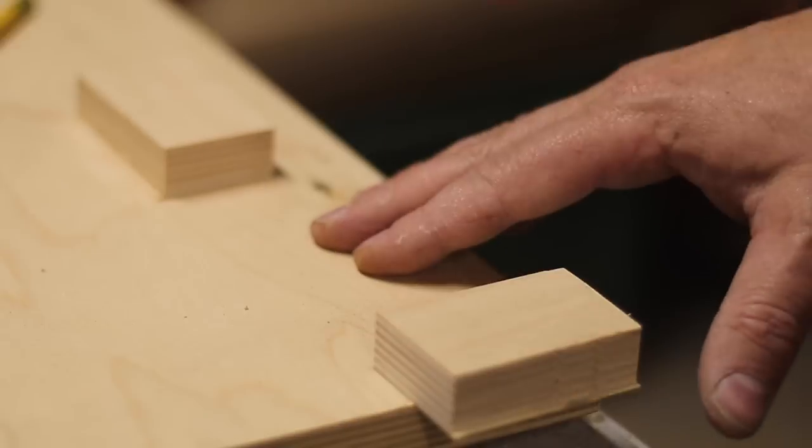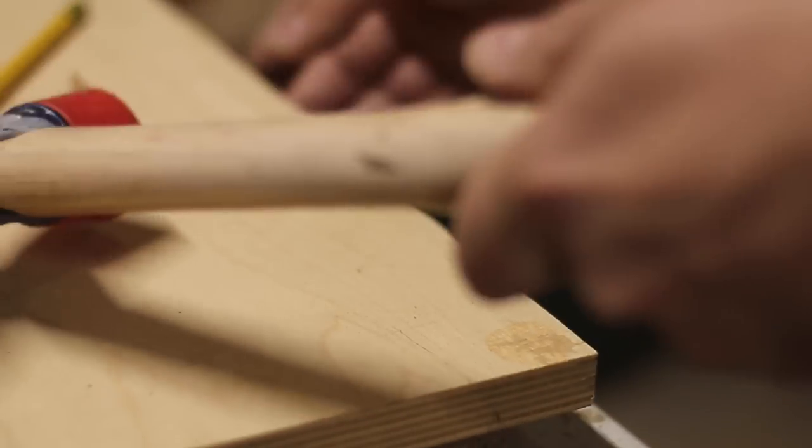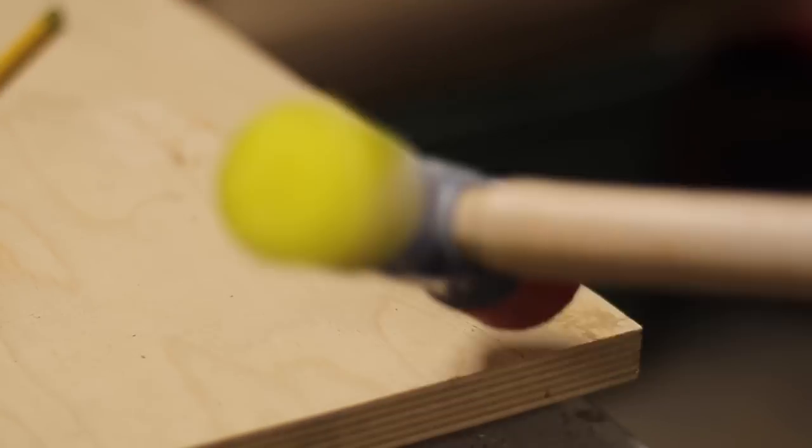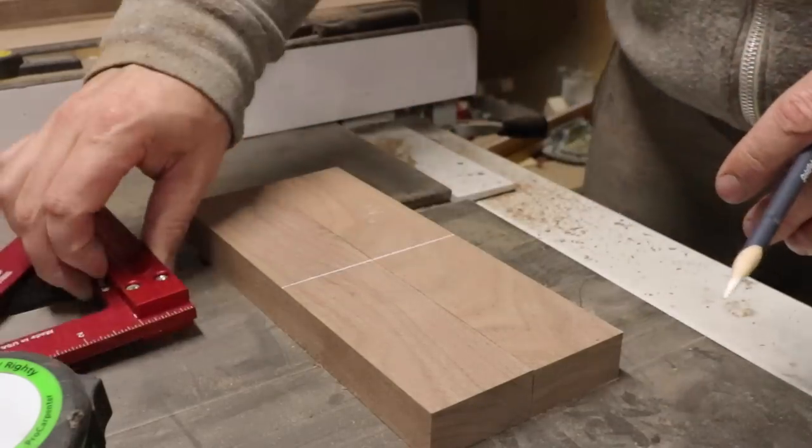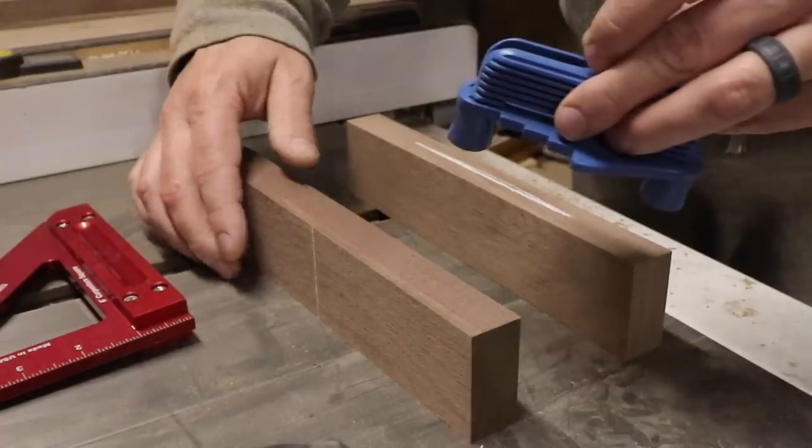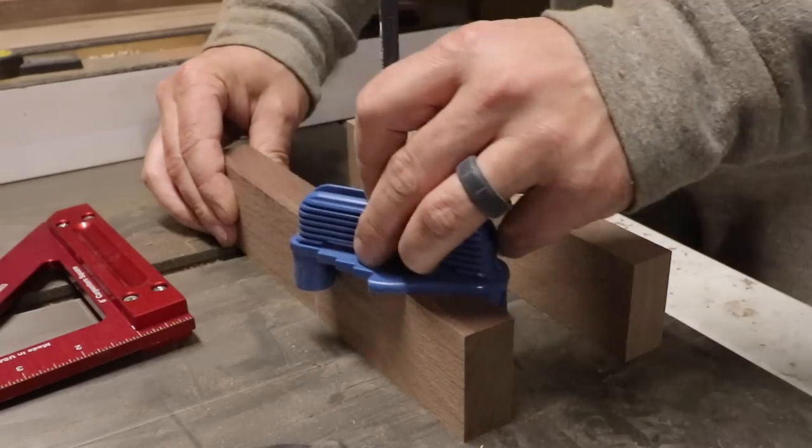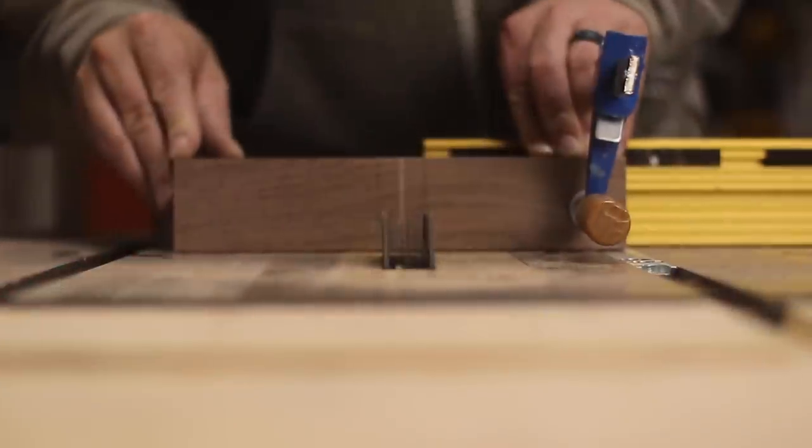When I was done with one set of legs, I could bang off the stops and get set up for the next. I use half lap joints to join the center stretchers of the legs together, so what you see me doing here is just marking out my centers so I could figure out my heights for my dado stack.